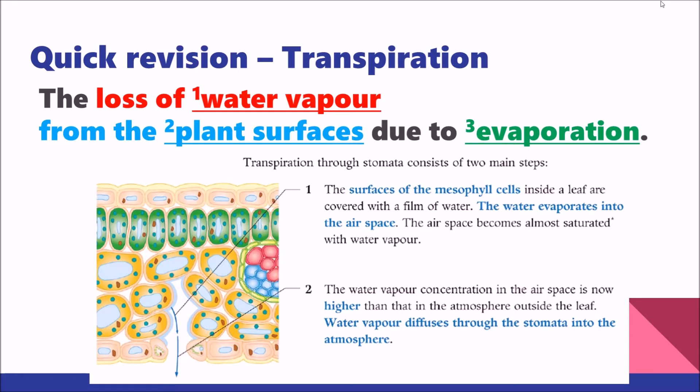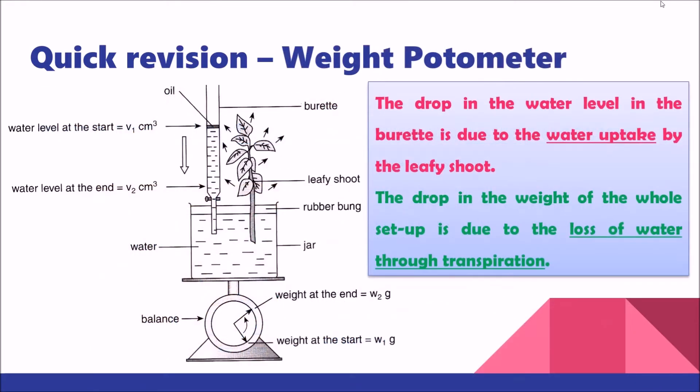This diagram is extracted from the textbook, so perhaps you can take a look at it. For the second quick revision, remember that a weight potometer is a very powerful apparatus for us to investigate transpiration, because it can give us three sets of data.